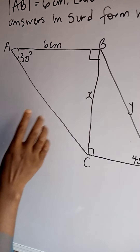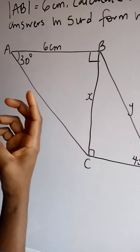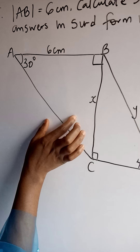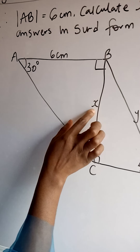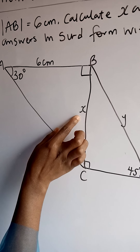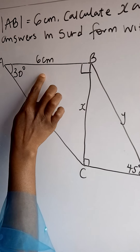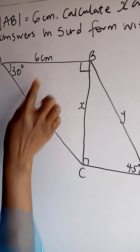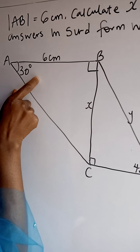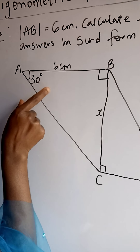How are we going to know the kind of formula to use — whether it's sine, cos, or tan? We are going to know through the diagram given. We are given X to be the opposite, and we are also given the adjacent. Opposite over adjacent is tan, so we are making use of tan 30 degrees.